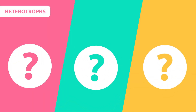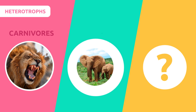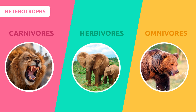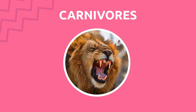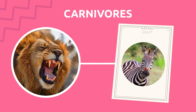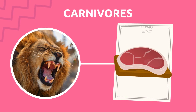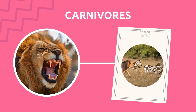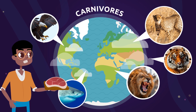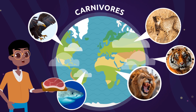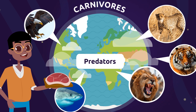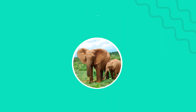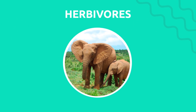Based on what they eat, heterotrophic organisms are classified into three groups: carnivores, herbivores, and omnivores. Let's have a closer look. Carnivores feed on other heterotrophs — they hunt other animals to eat. That's why we call them predators.